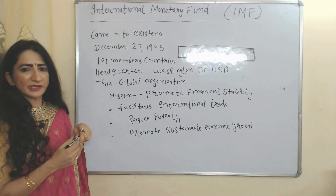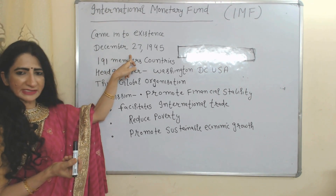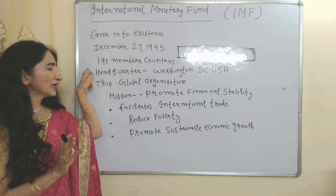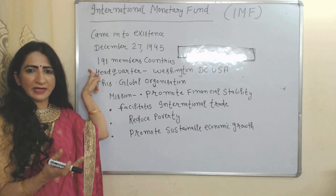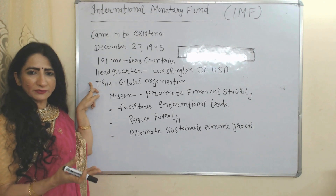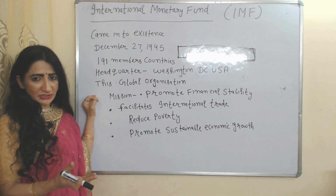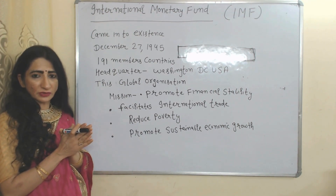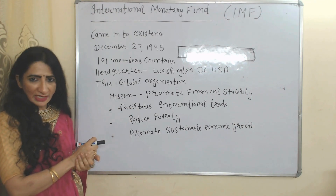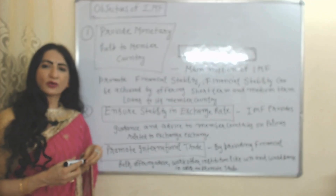First we will see the International Monetary Fund. This organization came into existence on 27 December 1945. Currently it has 191 member countries. Its headquarter is in Washington, USA. It is a global organization, and the main missions are: promote financial stability, facilitate international trade, reduce poverty, and promote sustainable economic growth.